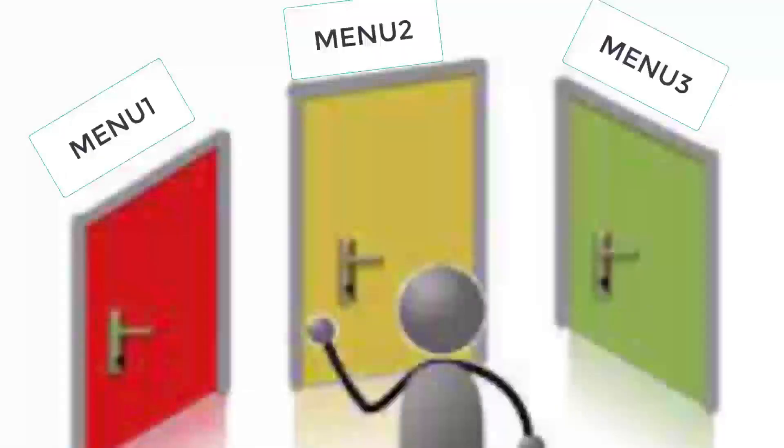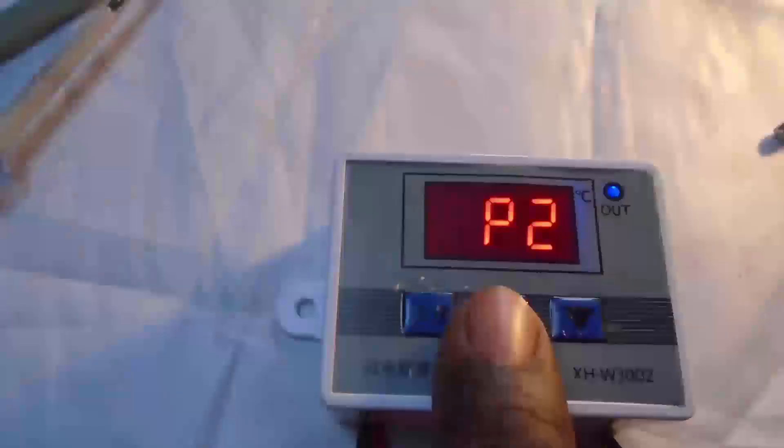We also have several menus that appear on the thermostat screen. Menu P0 is the start value of the thermostat output — it allows the thermostat to start after it has stopped at this programmed value. Menu P1 is the stop value of the thermostat output — it stops the thermostat at the value assigned to P1.